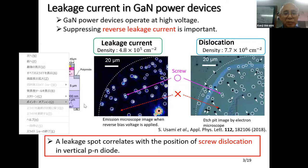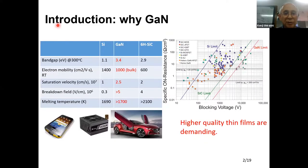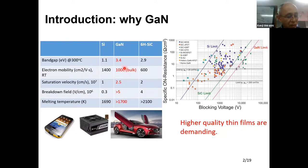Gallium nitride is the premium material in application of devices, but now it is recognized as an emerging material for power devices, which has a wider band gap and is robust in harsh environments with high breakdown field.